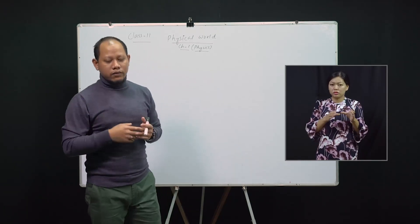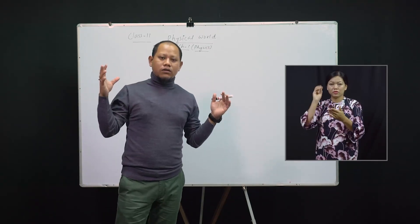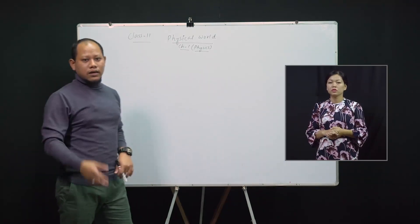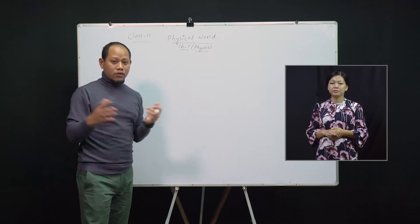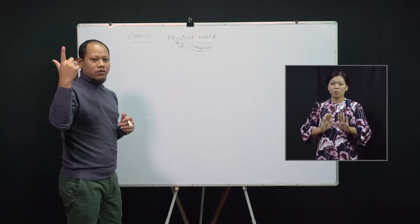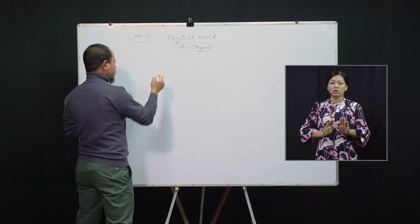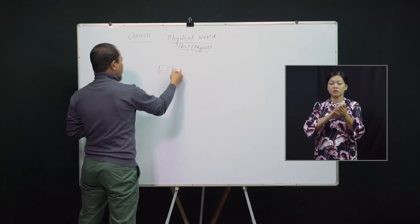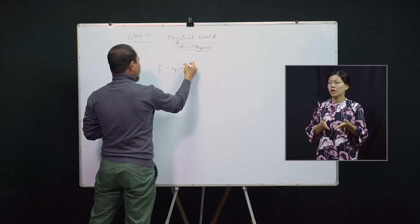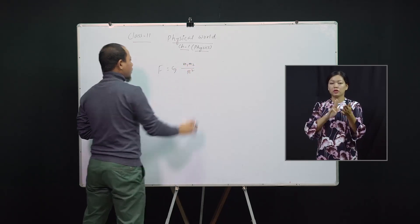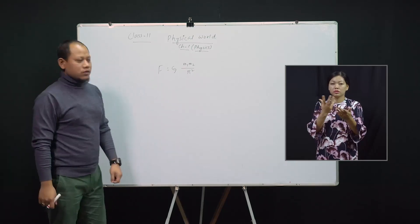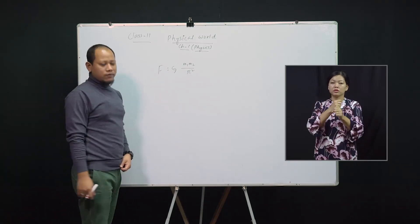Now let's discuss force. Force is push or pull. We have almost discussed what is gravitational force. According to the previous class, we have done till F equal to Z M1 M2 divided by R square, where Z is called the universal gravitational constant. This expression will be important for you.